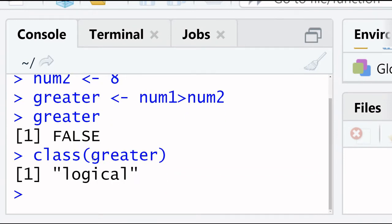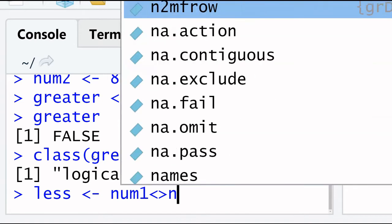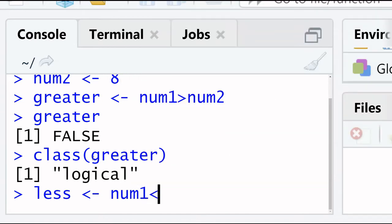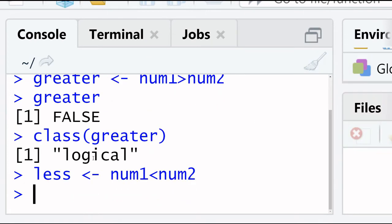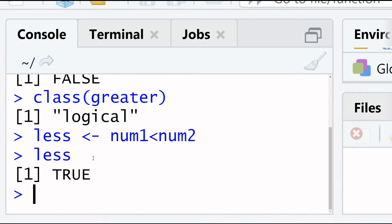So this is logical. Now we assume another variable name less. num1 less than num2, enter less, true. So num1 is 6 and num2 is 8 so 6 is less than 8 so this is true.